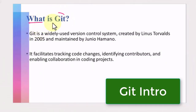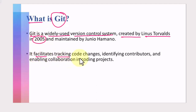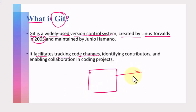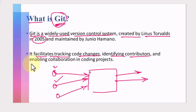Git is a widely used version control system created by Linus Torvalds in the year 2005. Git facilitates tracking of code changes — if we are working on a project, every change in that codebase will be tracked by git. Git will also help us uniquely identify every contributor, so if we have multiple contributors making changes to the project, git will identify all of these individual contributors.